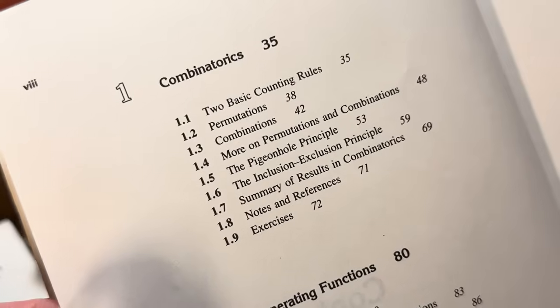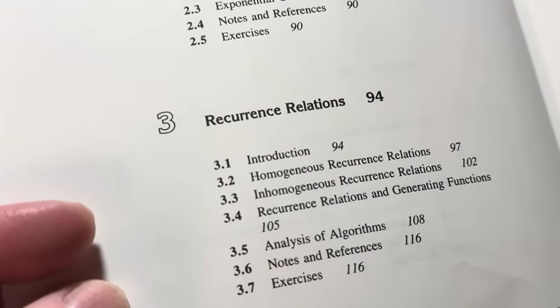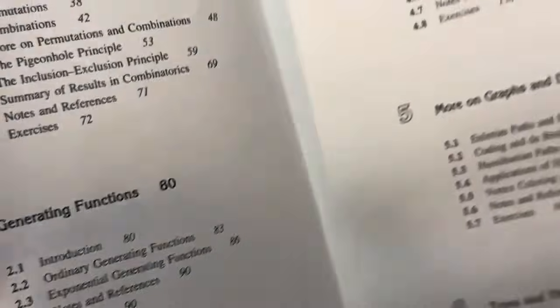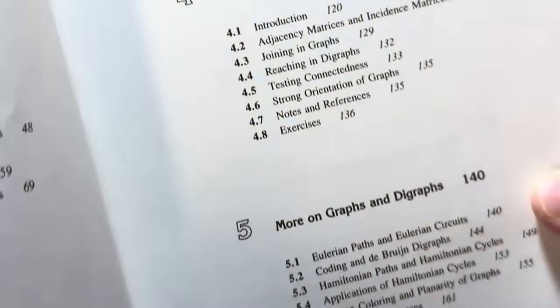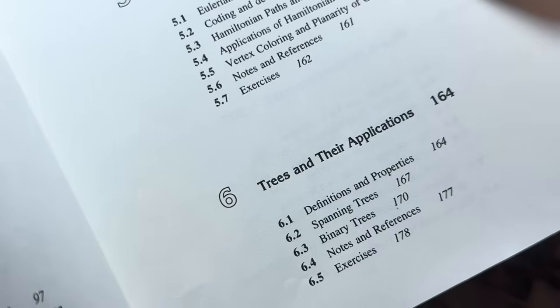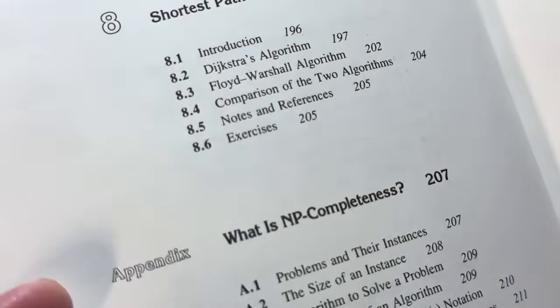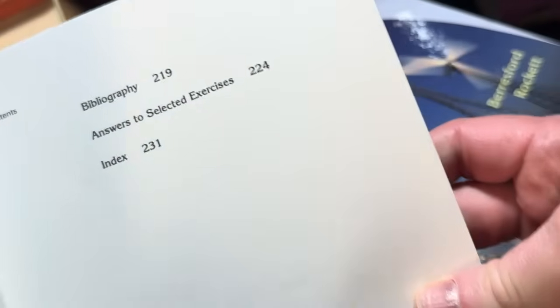Combinatorics. Again I've actually read that entire chapter. Generating functions. Recurrence relations. Graphs and digraphs. More on graphs and digraphs. Trees and applications. Quite a bit of content as you can see. Spanning tree problems. Shortest path problems. What is NP completeness. And you have answers to selected exercises. Now that was a lot of content. I went through it pretty quickly.